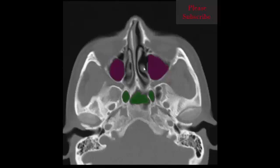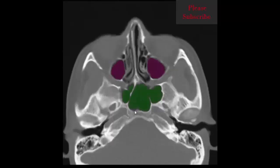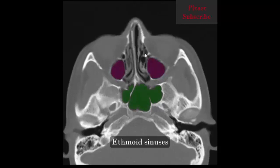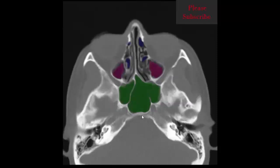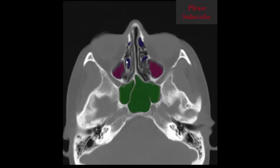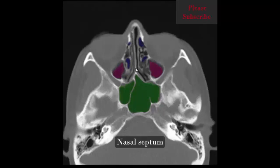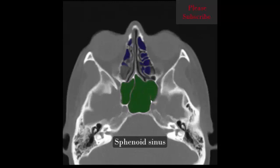At higher slices we can now see the superior turbinate and sphenoid sinus. Also visible are the right and left maxillary sinus, ethmoid sinus, sphenoid sinus, nasal septum, and nasal cavity.